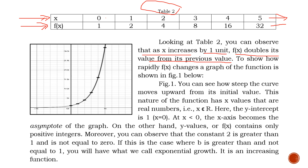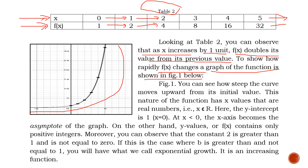If your x value increases by 1 unit, it doubles. So 1 multiplied by 2 is 2, then there is an increase of 1 unit again from 1 to 2, then 2 multiplied by 2 becomes 4 — there is a 1 unit increase in your x value and it doubles your f of x. To show how rapidly f of x changes, a graph of the function is shown in Figure 1. Here is the graph that represents the values on Table 2 — you can see how steeply the curve moves upward from its initial value.